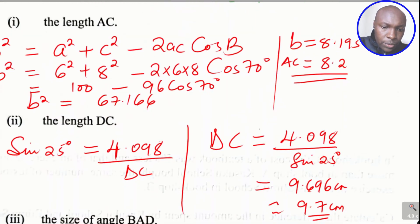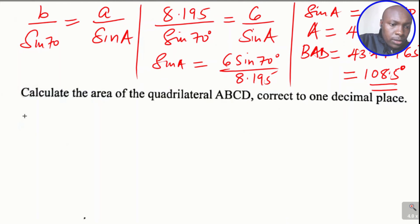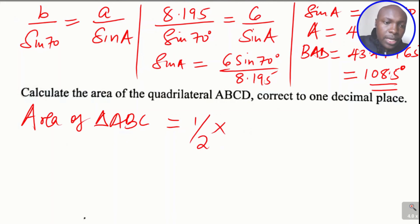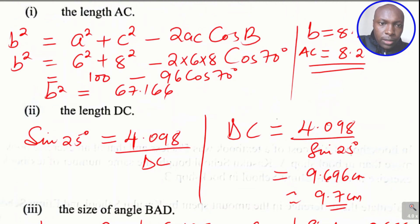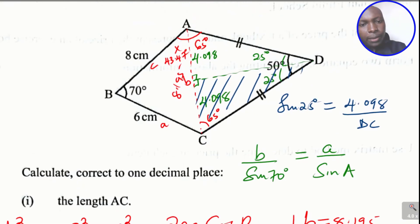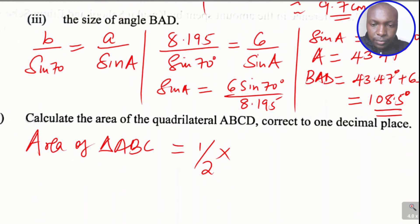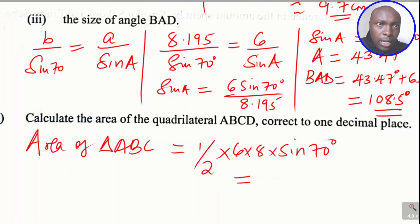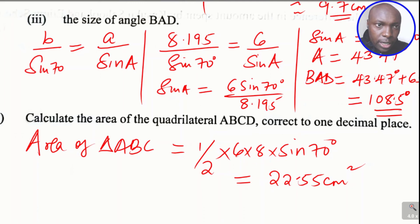Area of triangle ABC equals one half times AB times BC times sine of the included angle, which is one half times 6 times 8 times sine of 70 degrees. Working this out with a calculator gives 22.55 centimeters squared.